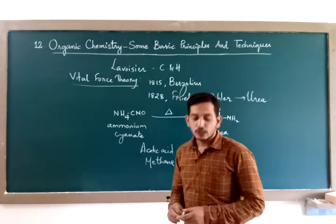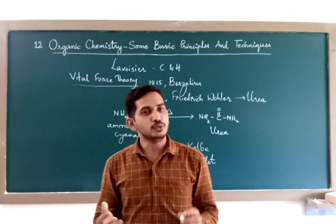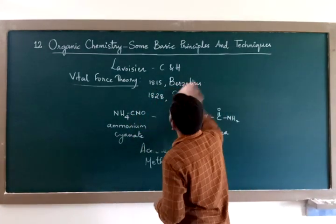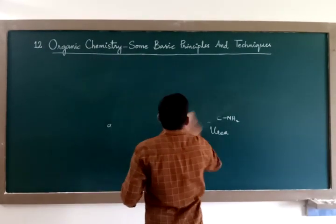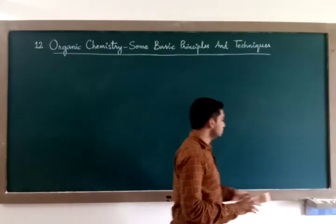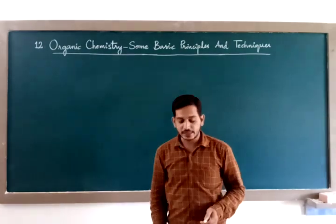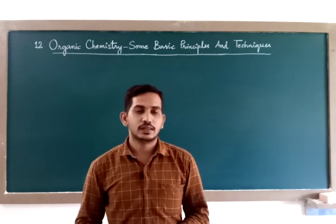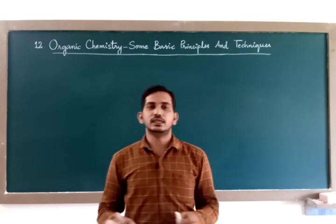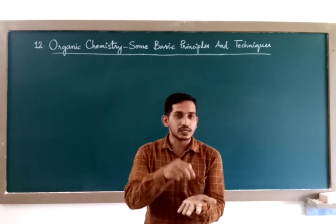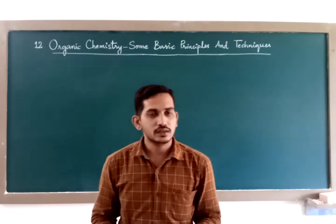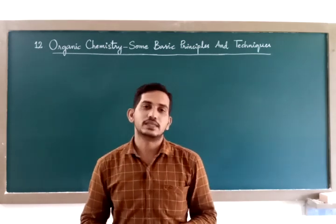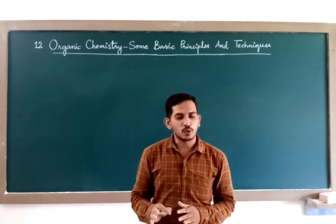Once the vital force theory was disproved, many scientists took up preparing organic compounds, and this led to a separate branch in chemistry called organic chemistry. In this chapter, you will study some basic principles and techniques used in organic chemistry. Beginning with: if you have any organic compound, how do you say it is organic or not? Lavoisier said organic compounds contain carbon and hydrogen — so you need to analyze the compound. That part is called analysis.